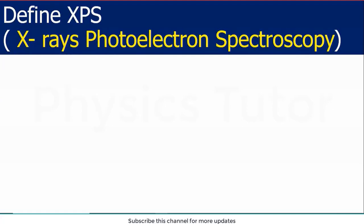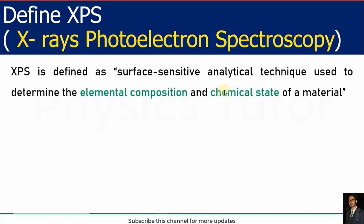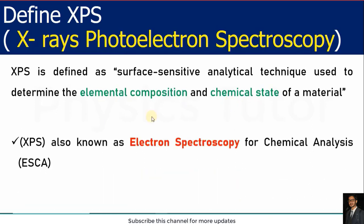Now we see the definition of XPS. XPS is defined as a surface-sensitive analytical technique used to determine the elemental composition and chemical state of a material. The basic constituents are elemental composition and chemical state. XPS is also called electron spectroscopy for chemical analysis, abbreviated as ESCA. Sometimes this term is used, sometimes it is called electron spectroscopy, and sometimes XPS — you should remember all these names.